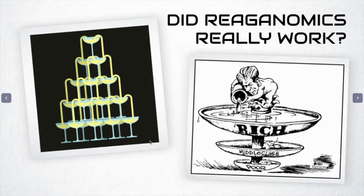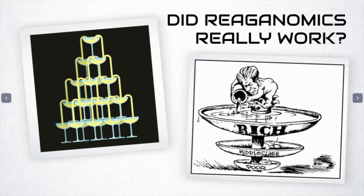Reaganomics is still pretty controversial. The goal of Reaganomics looks like the image on the left of your screen — pretend all that liquid is money. If you pour a lot of money onto the top of the pyramid, it overflows, falling down and filling up each of the glasses in the middle and bottom. But a lot of people feel that in reality Reagan acted more like the image on the right, where the richest have such a large bowl that all the liquid poured just collects and stays with them, and very little actually trickles down to the rest of the country.